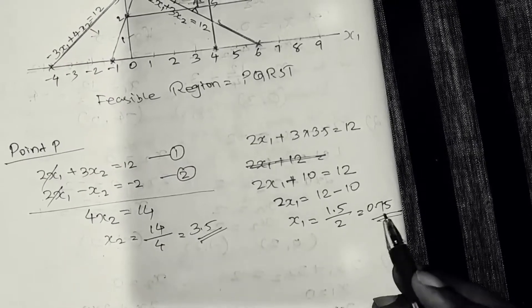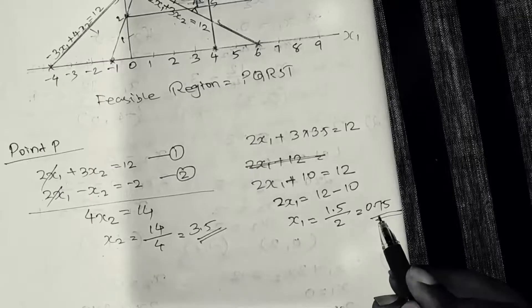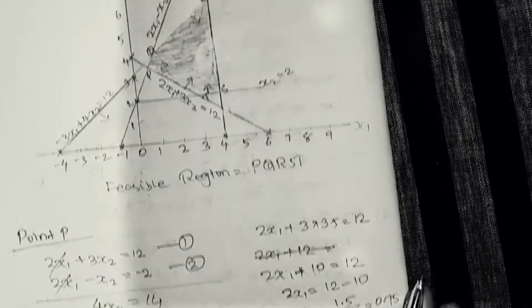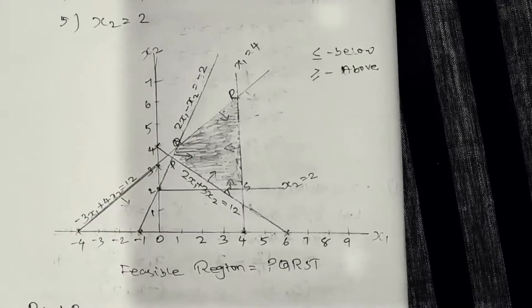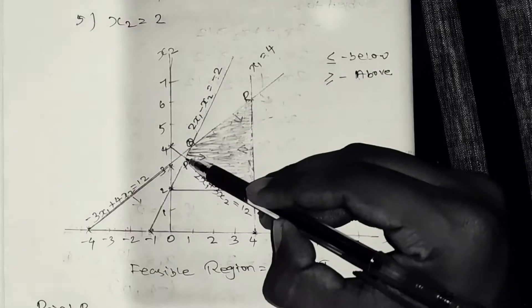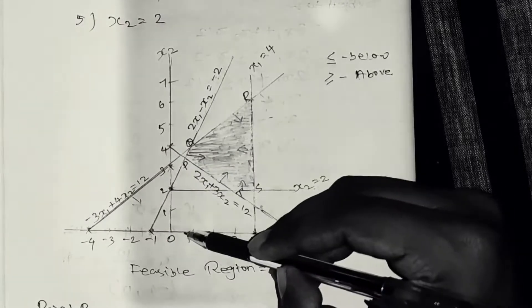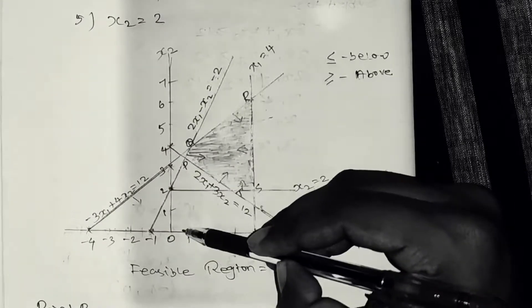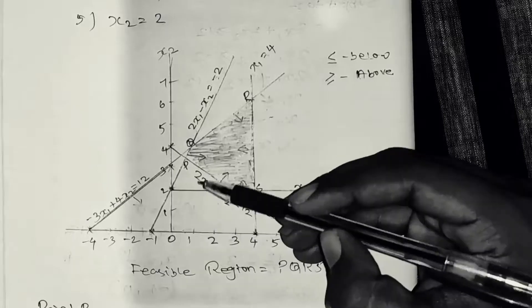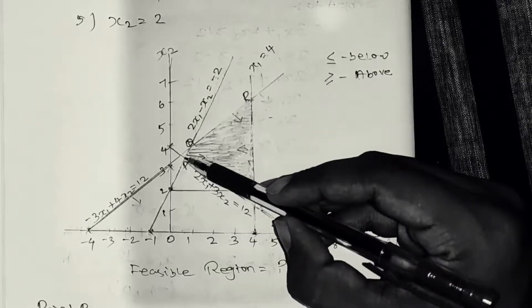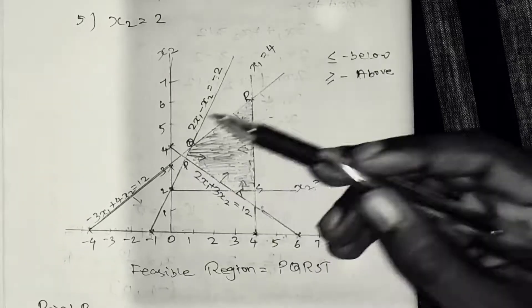So x2 equals 3.5, and x1 value is 0.75. Therefore, point P is (0.75, 3.5).